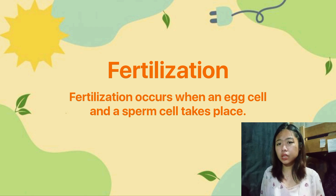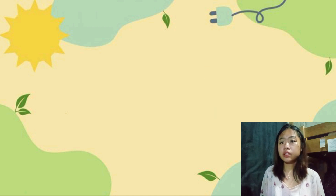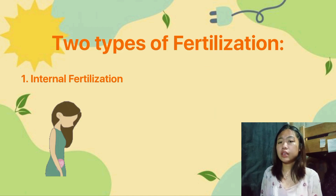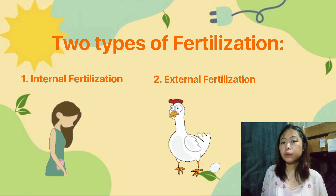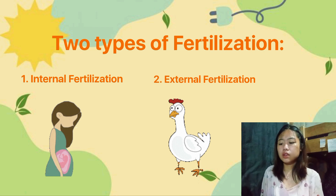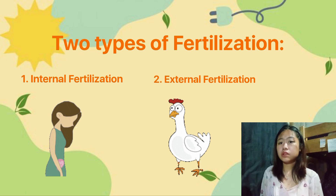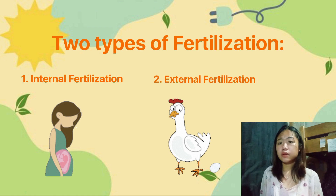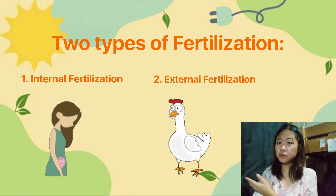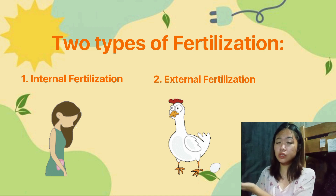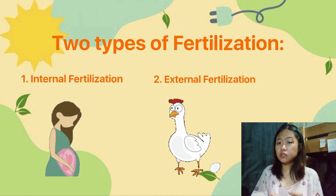There are two types of fertilization: internal and external. We notice that in each picture, one mother is carrying her baby inside her womb, and the other mother is producing her eggs outside in the environment. The first picture represents internal fertilization, and the second picture is obviously external fertilization.